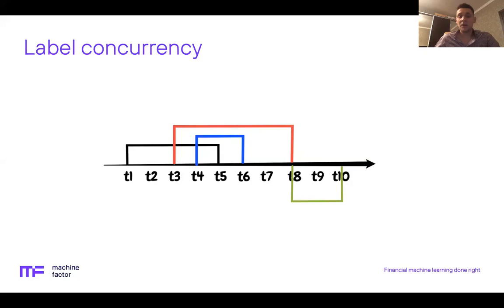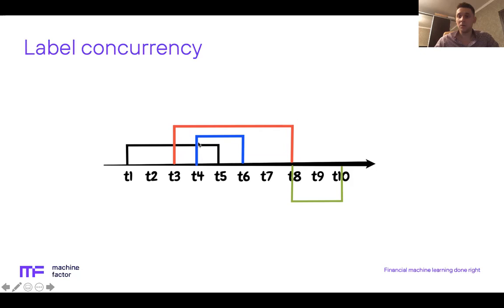Let's look at an example to understand label concurrency. Suppose we generate a signal at t1 and enter a position held until t5, when either a horizontal or vertical barrier is hit. However, at t3 and t4 we receive new signals. This creates the problem of label concurrency or overlapping trades: we need to somehow allocate capital to signals generated at t3 and t4. We cannot allocate 100% of our capital to each signal — we need to spread our capital to match capital constraints.